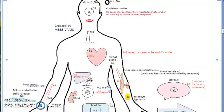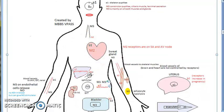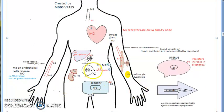If you block beta, glycogenolysis will not happen. That means there can be hypoglycemia, so hypoglycemia problems will be there.